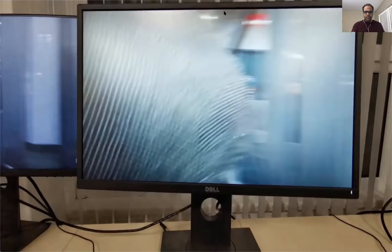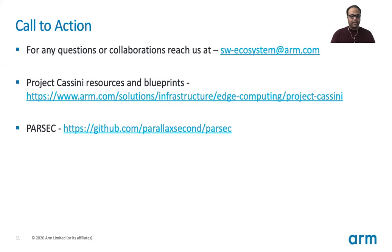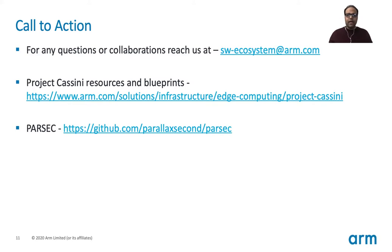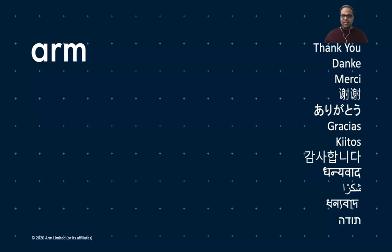So let me go back to the slides. This is the last slide. If you have any questions or collaboration opportunities, you can reach us at sw-ecosystem@arm.com. For any Project Cassini resources and blueprints, you can check out the provided link, and for Parsec-related information you can check out the GitHub repo — everything is available over there. With that, I would like to say thank you for attending this session, and I hope you've learned something new. Thank you very much.